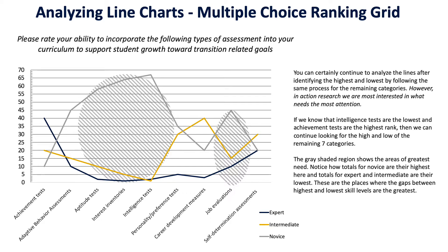You can also see another gap or spike in skill levels around job evaluations and self-determination assessments in this example — that space is much larger than the other ranges, both numerically and visually.